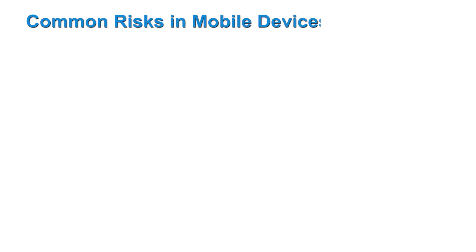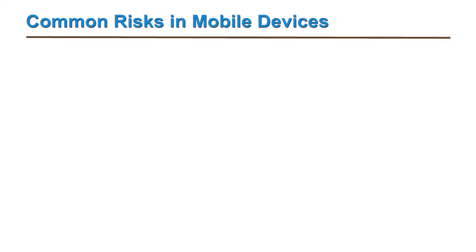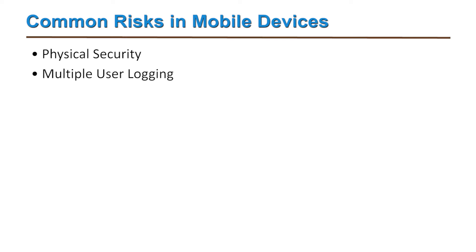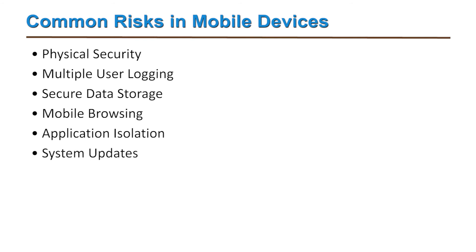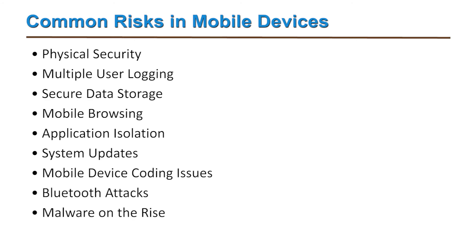As mobile users increase over the years, so does the number of attackers who try to compromise confidential information with or without one's knowledge. This results in personal risks, which include: physical security, multiple user logging, secure data storage, mobile browsing, application isolation, system updates, mobile device coding issues, Bluetooth attacks, malware on the rise, and serious threats in new features exploited by mobile devices.